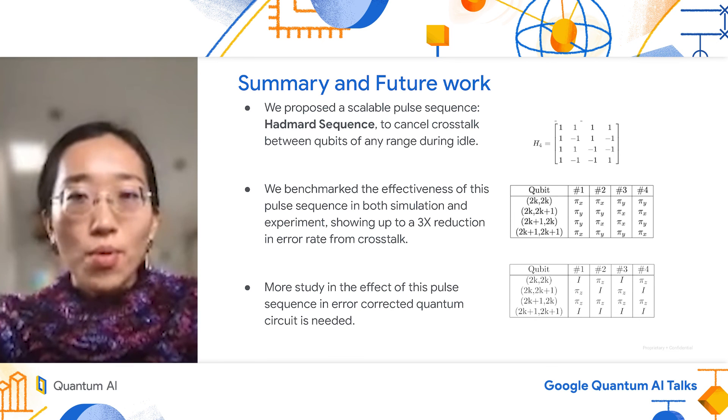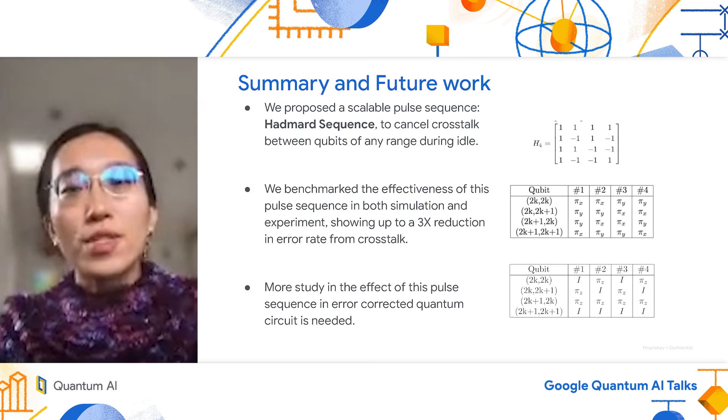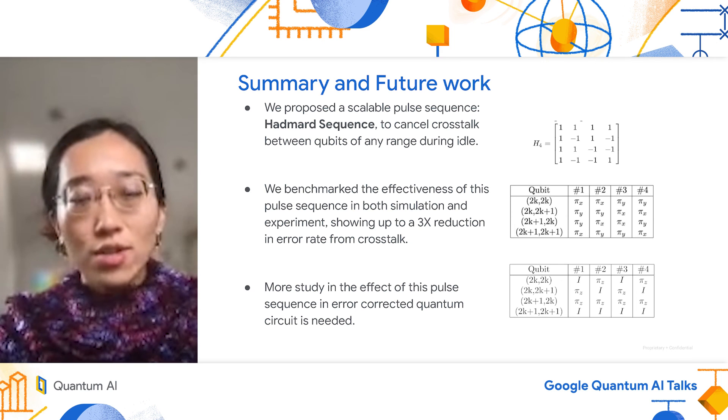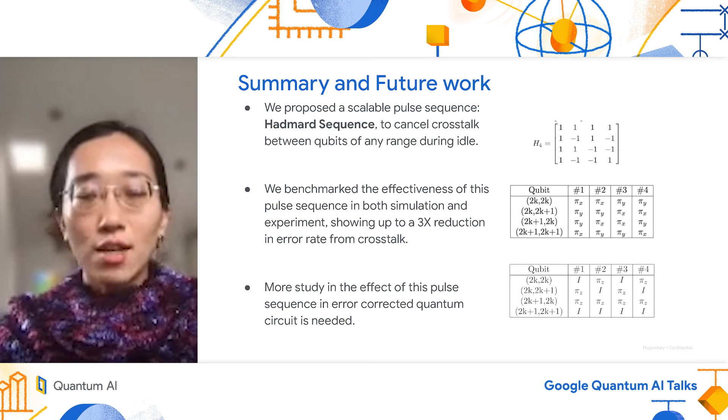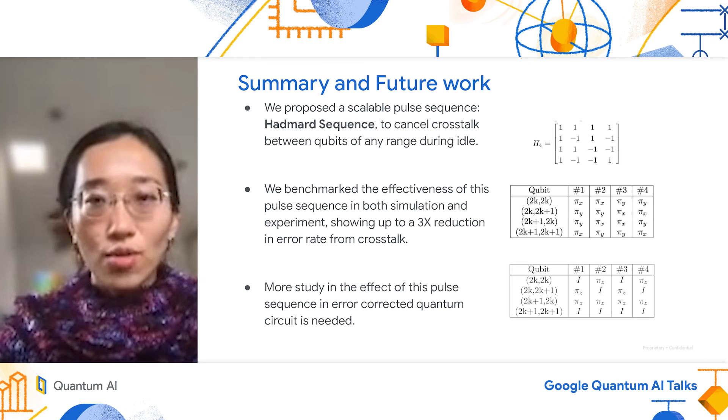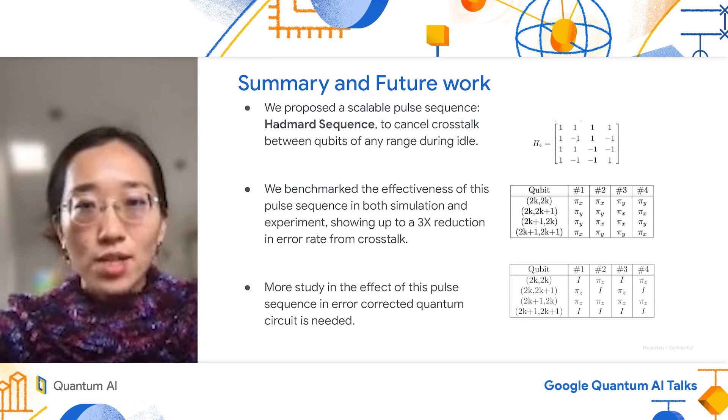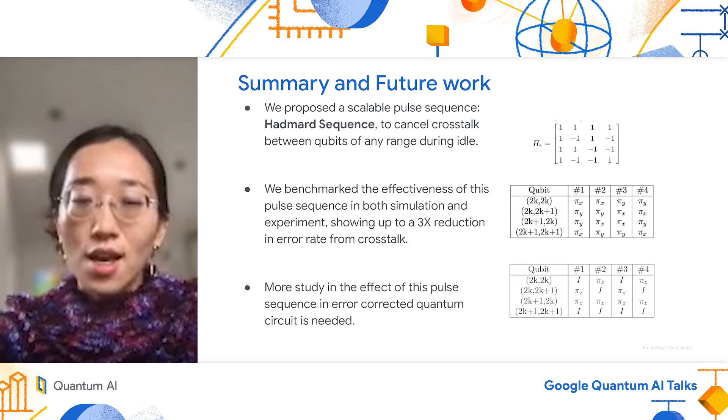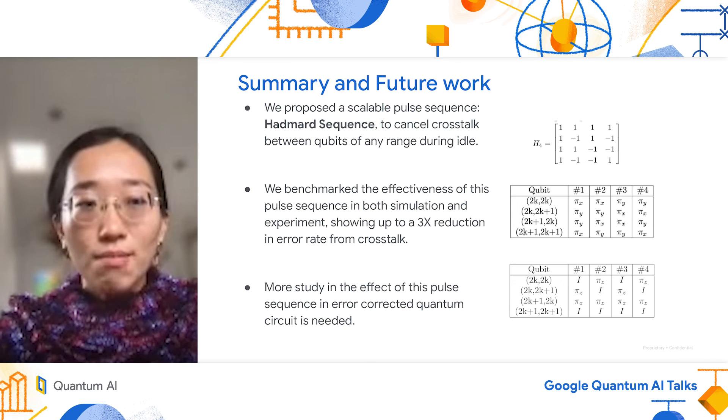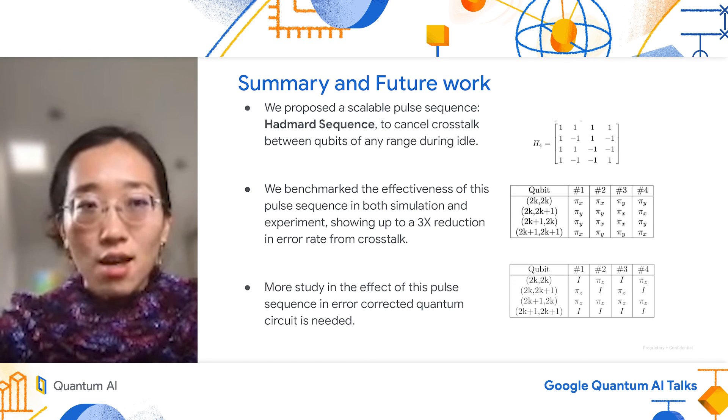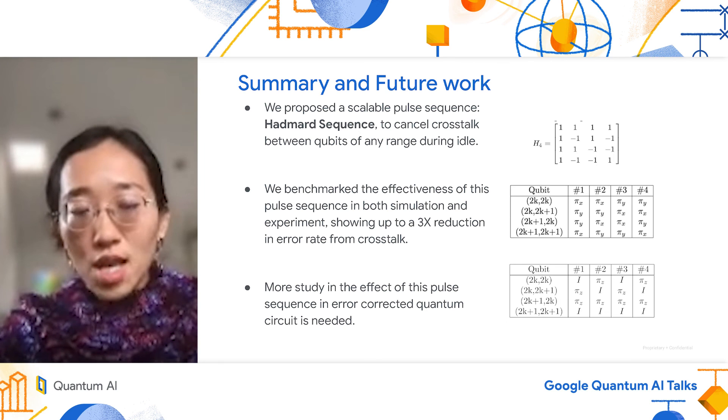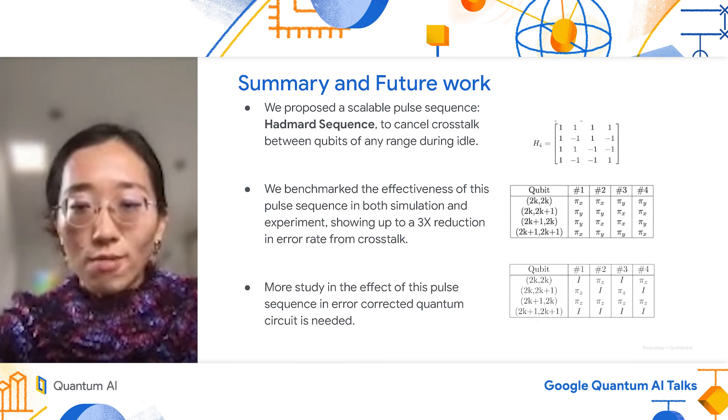In summary and future outlook, we proposed a scalable pulse sequence, Hadamard pulse sequence, to cancel out crosstalk between qubits of any range during idle. We benchmarked the effectiveness of this pulse sequence in both simulation and experiment and showed up to a factor of three reduction in error rate. Although more work is in place to study pulse sequences for error-corrected quantum circuits.